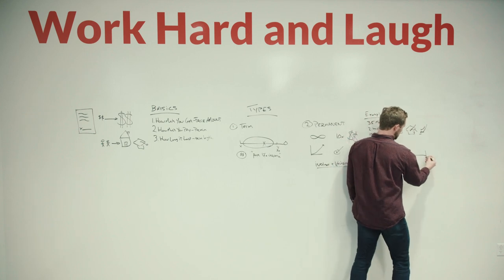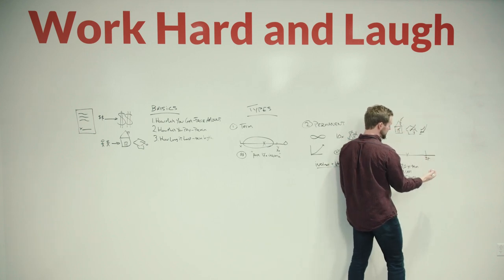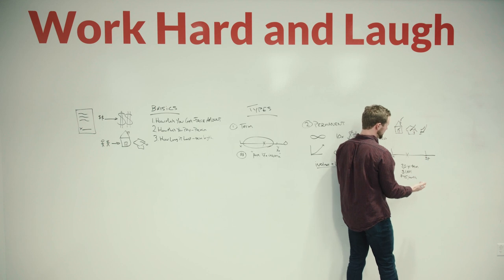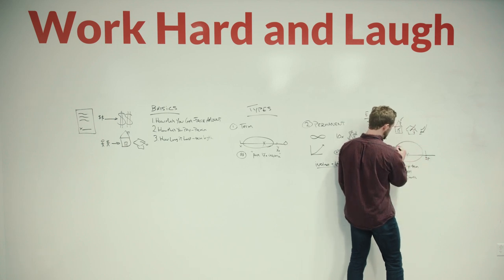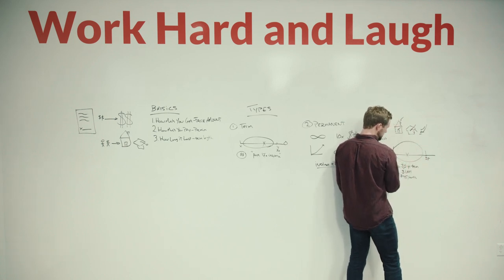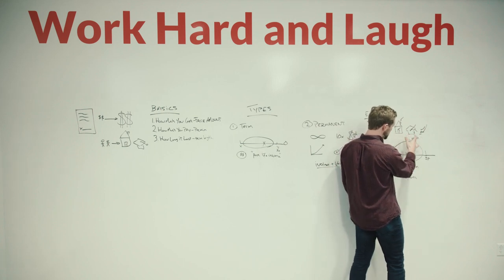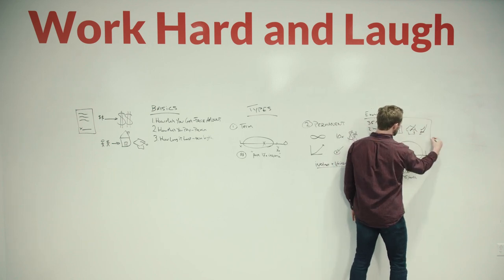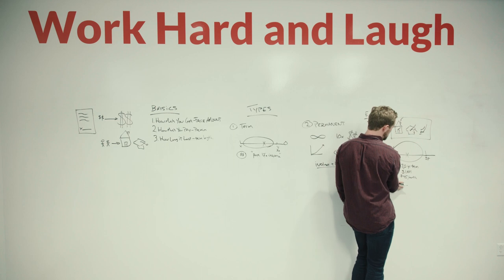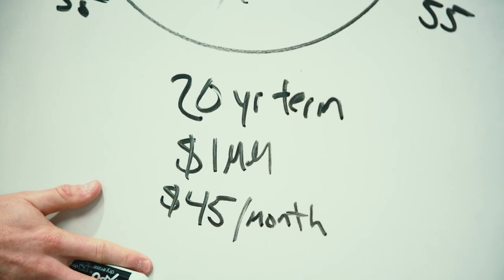Now let's say he gets to age 56. Well first off, great, he's alive, that's worth celebrating. But also, the term policy did its job, and the reason I say that is because in this period when he was raising money, saving money, paying off the home, saving for the children's education, his family was protected and they had the assurity that if something happened to him, all these things could still happen. And he was able to do it for a very reasonable price over the life of that policy.